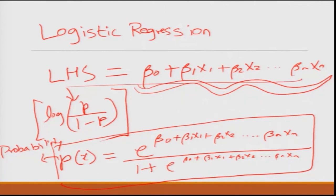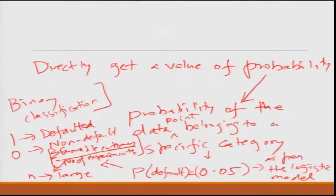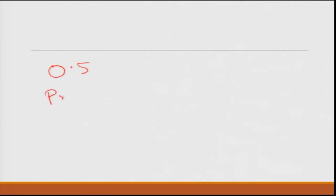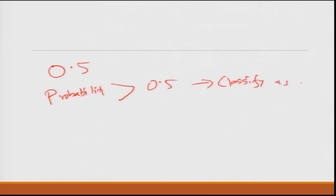The x-1s and x-2s are different parameters of the borrower — like credit history, demographic information, salary, and other things you get from know-your-customer information. Many banks also put a cutoff of 0.5: if the probability is greater than 0.5, classify as defaulter; if less than 0.5, classify as non-defaulter.